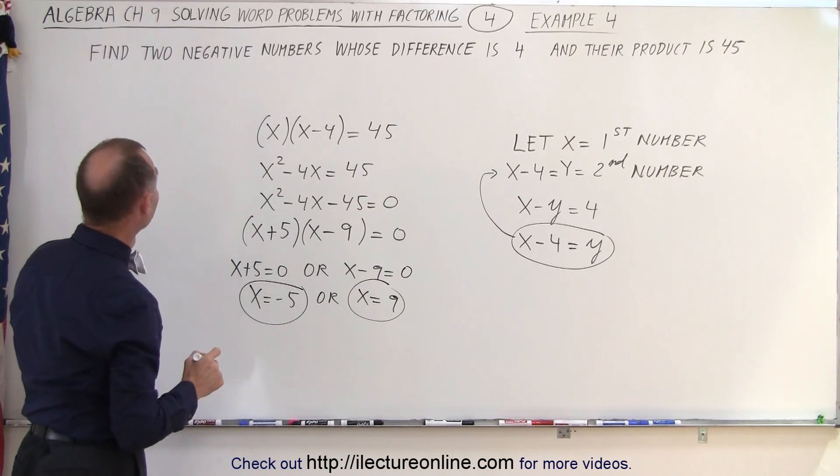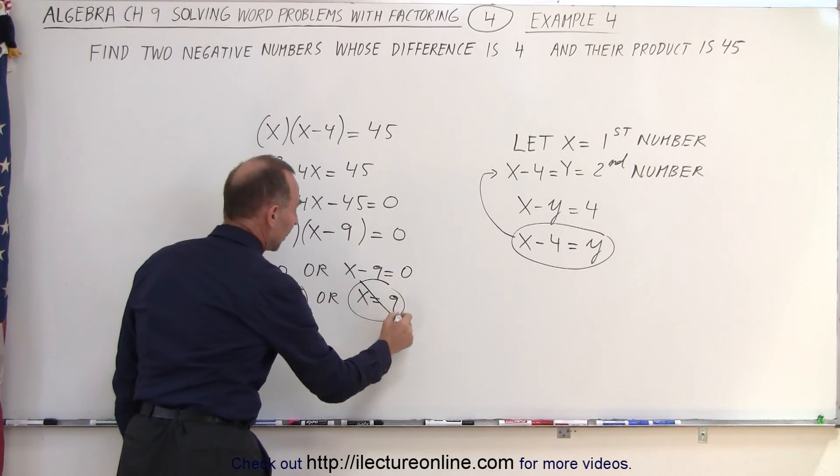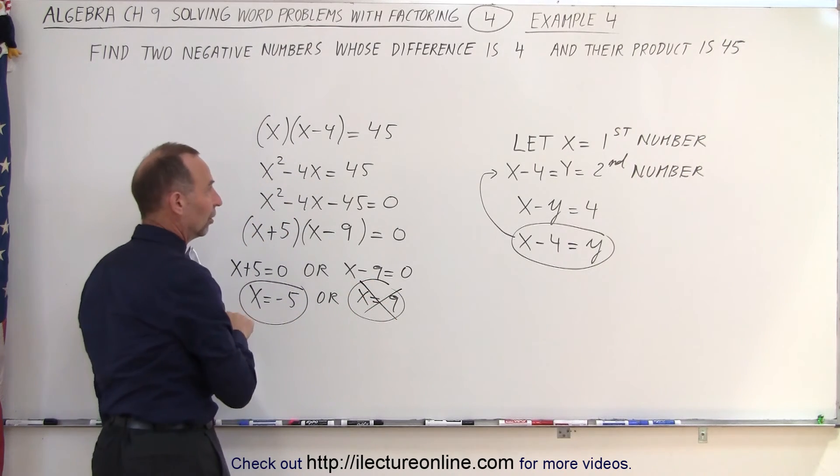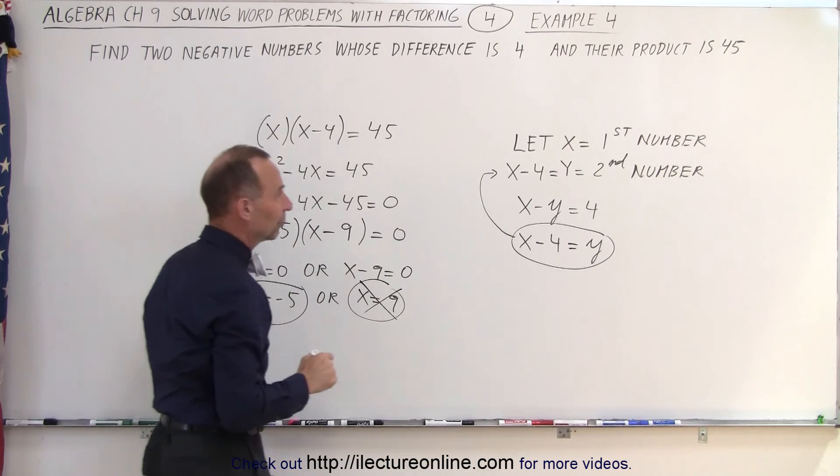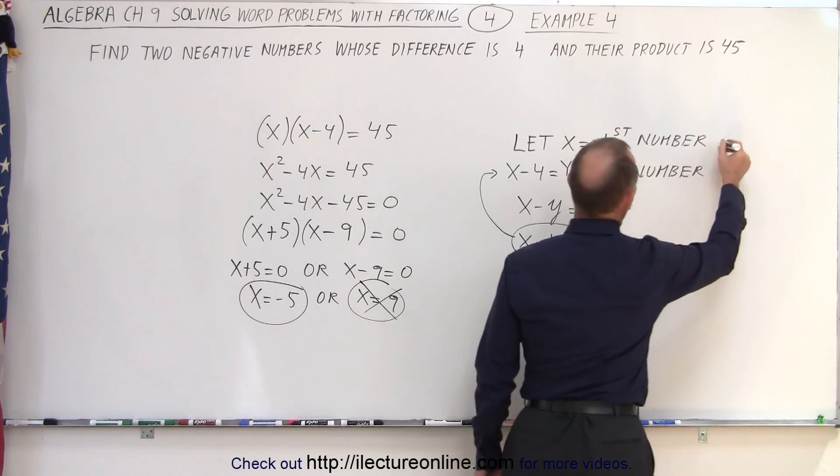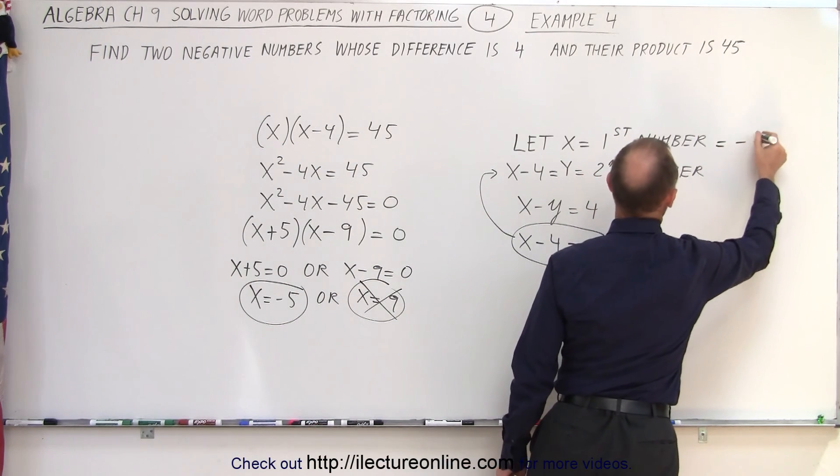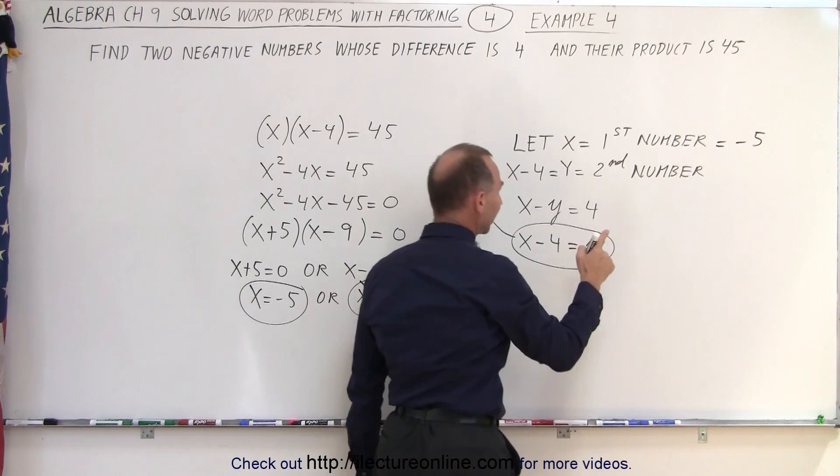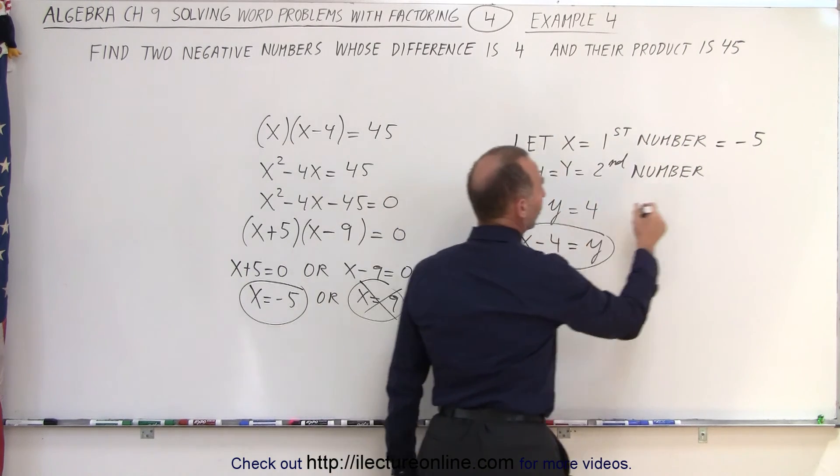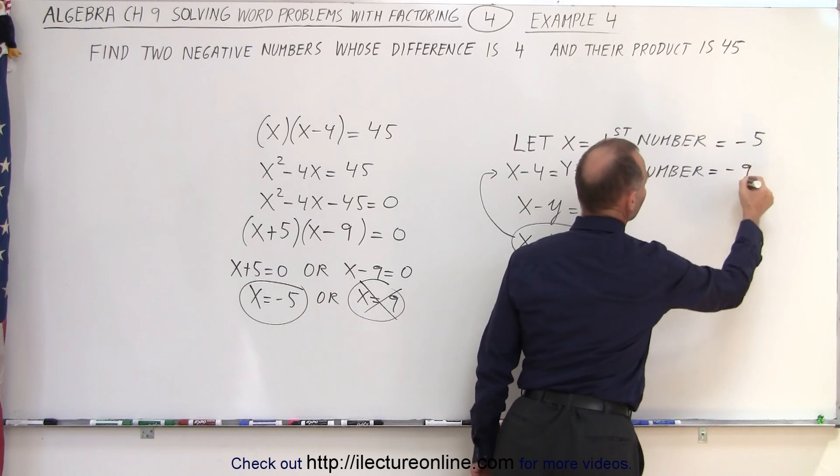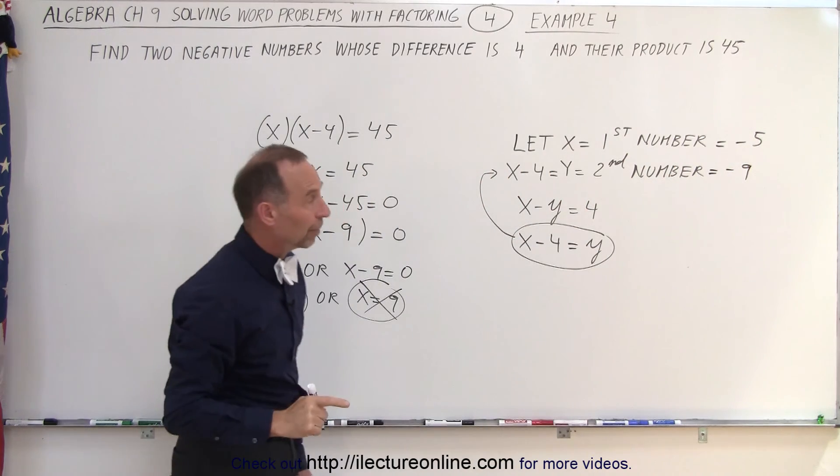Since I'm looking for negative numbers, I cannot use the positive answer. I must use the negative answer. So therefore, let x equal the first number. That means the first number equals negative 5. That means that the second number must be negative 5 minus 4, which is therefore equal to negative 9. And there are the two negative numbers.